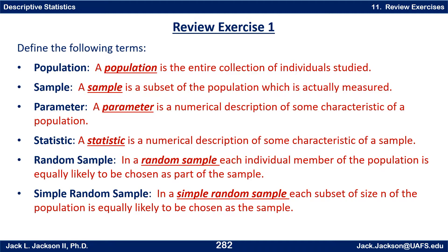A population is the entire collection of individuals studied. A sample is a subset of the population which is actually measured. A parameter is a numerical description of some characteristic of a population. A statistic is a numerical description of some characteristic of a sample. Notice: parameter and population both start with P — they go together. Statistic and sample both start with S — they go together. In a random sample, each individual member of the population is equally likely to be chosen as part of the sample.